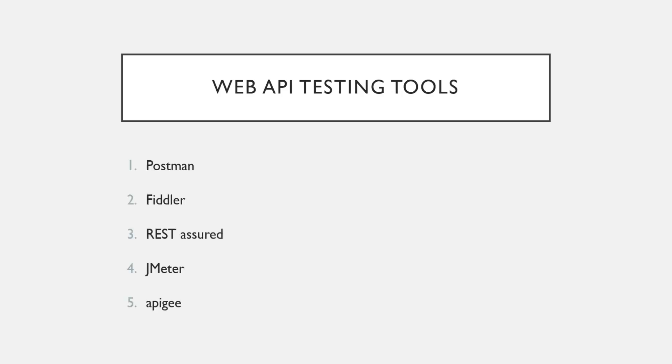There are many Web API testing tools available. Some of them are Postman, Fiddler, REST Assured, JMeter, and APG. Fiddler is not just a Web API testing tool — it can do many things — but one of its features is testing Web APIs. Here, I'm going to focus on the Postman tool.